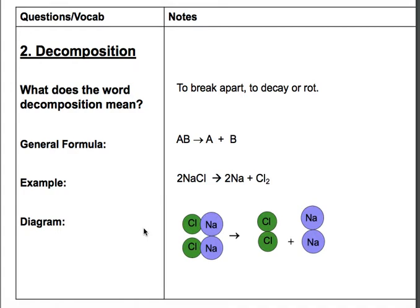So instead of making something, we're breaking it apart. So we have AB yields A plus B. So you'll see that you have a single reactant here, and you have two products. Again, same deal as last time. You can have more than two products. So the example here would be sodium chloride breaks apart into sodium and chlorine. And again, if you look at the diagram, you'll see that here they're all connected. When you break them apart, the chlorines and the sodium split from each other.